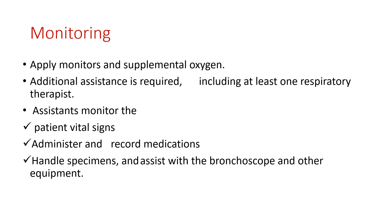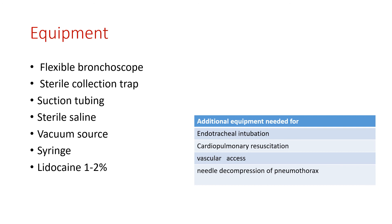While passing the scope, apply monitoring and supplemental oxygen. At least one respiratory therapist assistant is required. The assistant monitors vital signs, administers and records medication, handles specimens, and assists with the bronchoscopy. Equipment used includes: flexible bronchoscope, sterile specimen trap, suction tubing, sterile saline, vacuum source, syringe, and lidocaine.